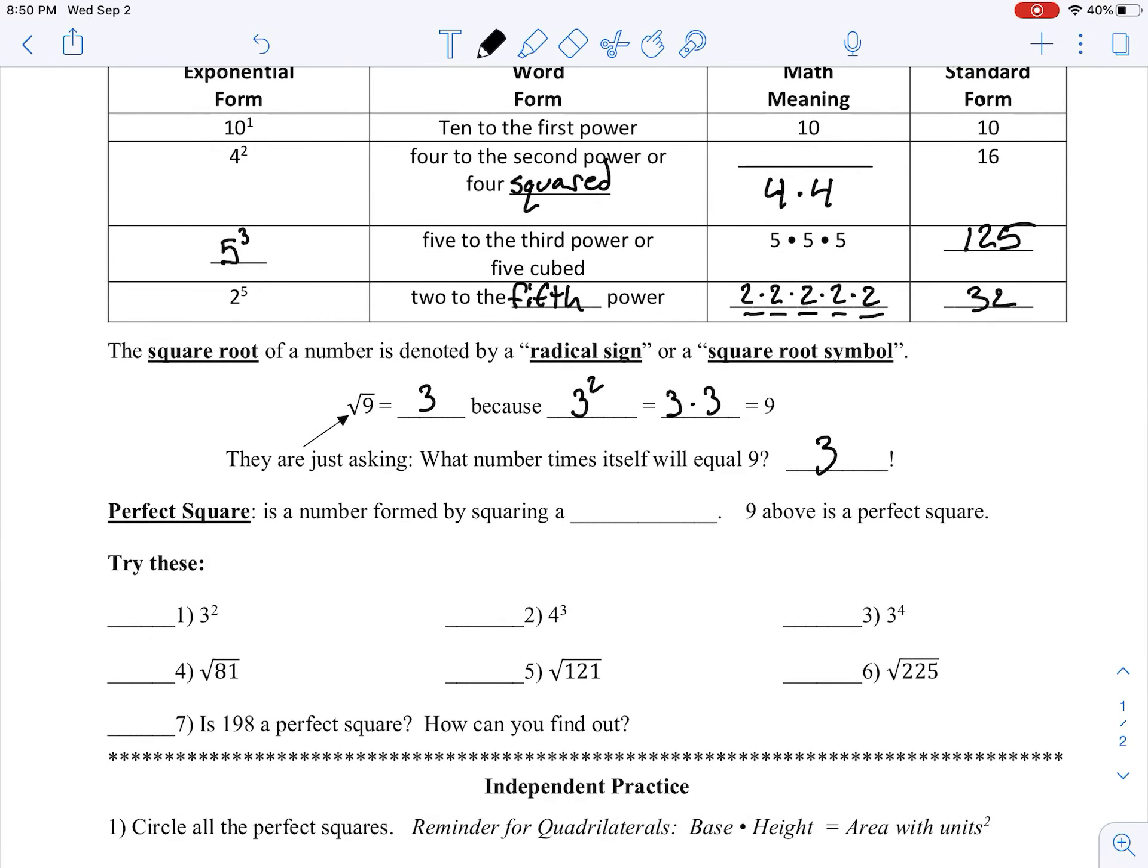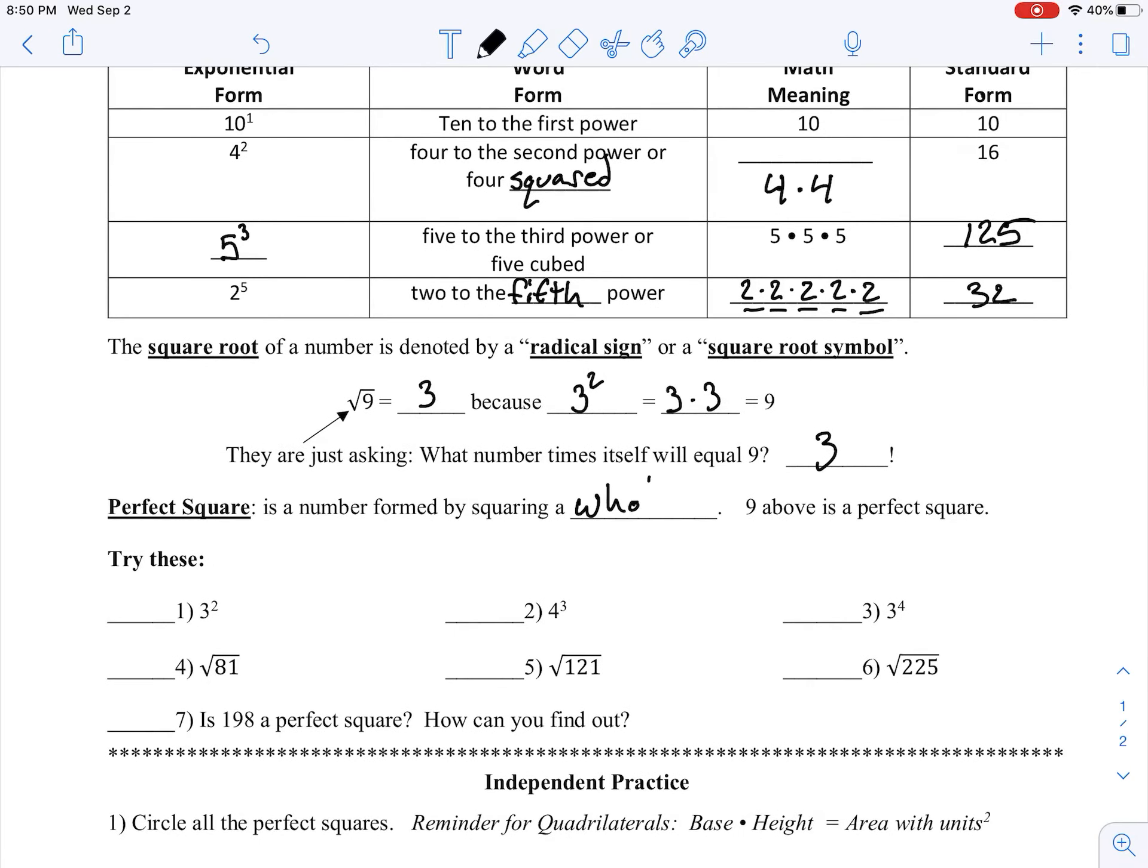Alright, and finally, a perfect square is a number formed by squaring a whole number. So our example from 9 above is a perfect square because we took a whole number, 3, and squared it to get 9. So 9 would be a perfect square. And if we draw out a little example here, we can do, split this into 3, so we're doing our 3 up here times our 3 over here, and we get a square that is 9 units big in area.